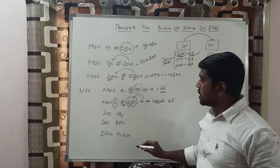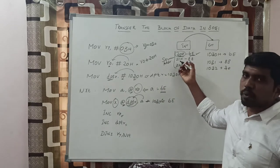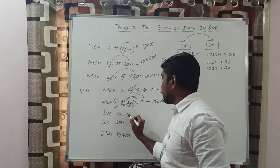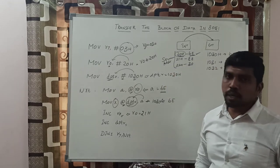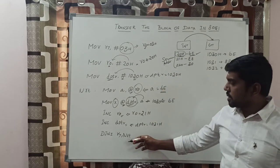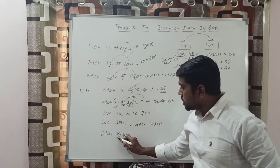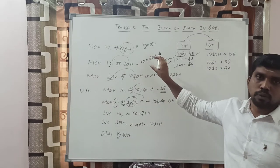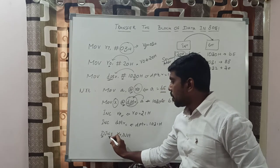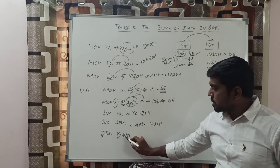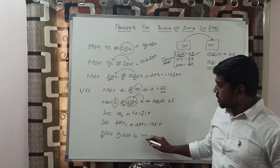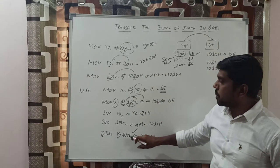Next, you increment both the R0 register and DPTR register to get the next data from the source and point to the next destination. After incrementing, R0 value is 21h and DPTR value is 1031h. Then you check the condition using DJNZ R7, next. R7 holds the count of how many values to transfer. You decrement R7 — DJNZ means Decrement and Jump if Not Zero. After decrementing, R7 becomes 02h, which is not zero, so it jumps back to the next label.